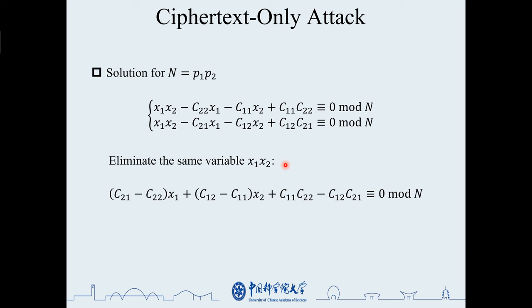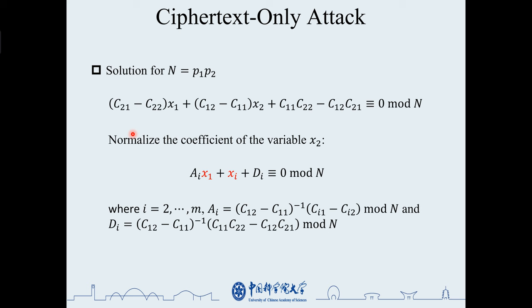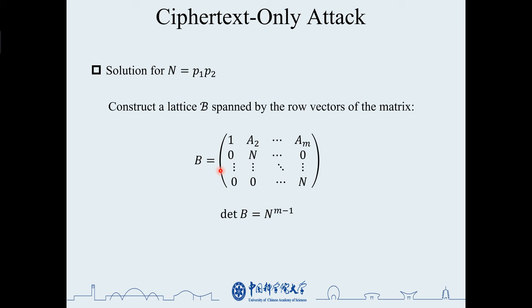Eliminate the same variable, x1, x2, x1 times x2, and normalize the coefficient of x2. We obtain the equations on x1 and x2, and then solve them using the lattice method. We construct such a matrix where the diagonal n denotes the modulo and ai in the first row are the coefficients of the equation.